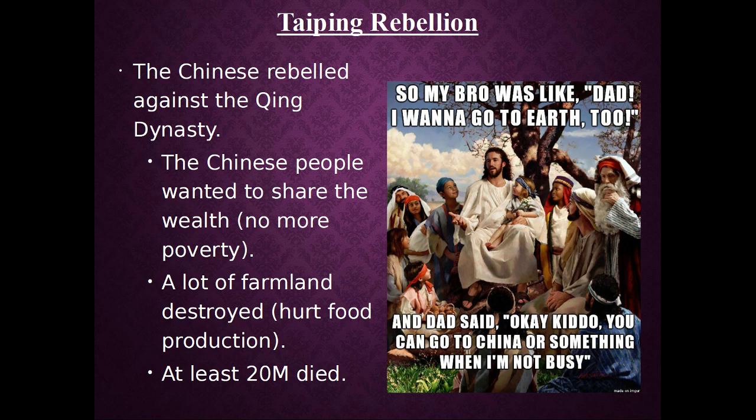When I say the Qing dynasty is suffering, we know by now that doesn't mean the people at the top are suffering. The rich people are not doing poorly — it's the poor people, the peasants, the people that are starving. So the Chinese people said, 'We want no more poverty; we want to share in the wealth; we want to make this work. Our farmland has been hurt by flooding; we're not getting enough food.' So they rise up and gather around this dude who said he was sent down by God to earth to lead them in revolution and to bring equality to society — to create a paradise for everybody.